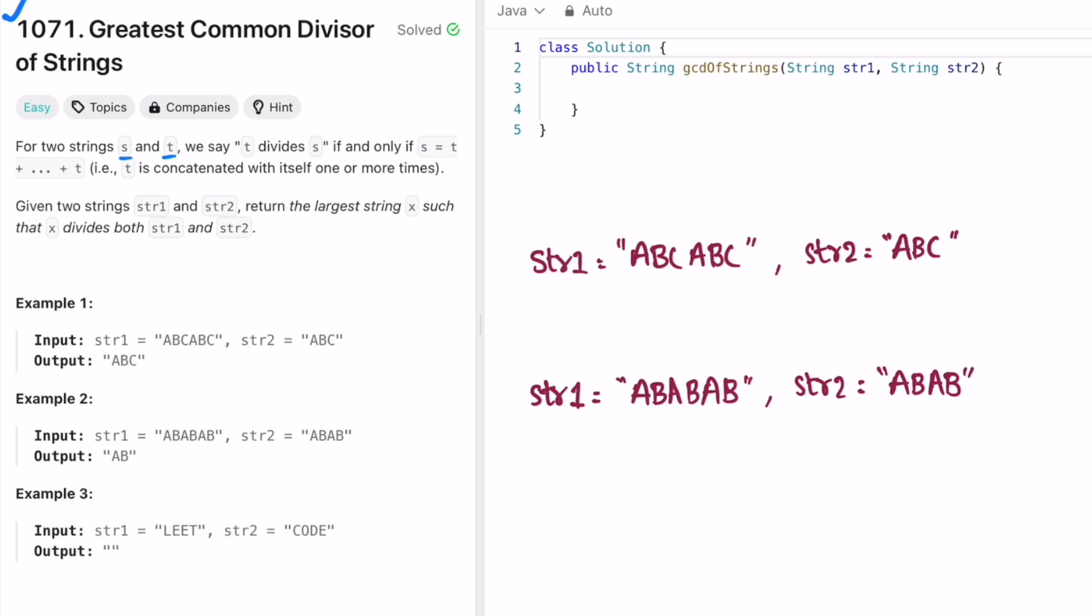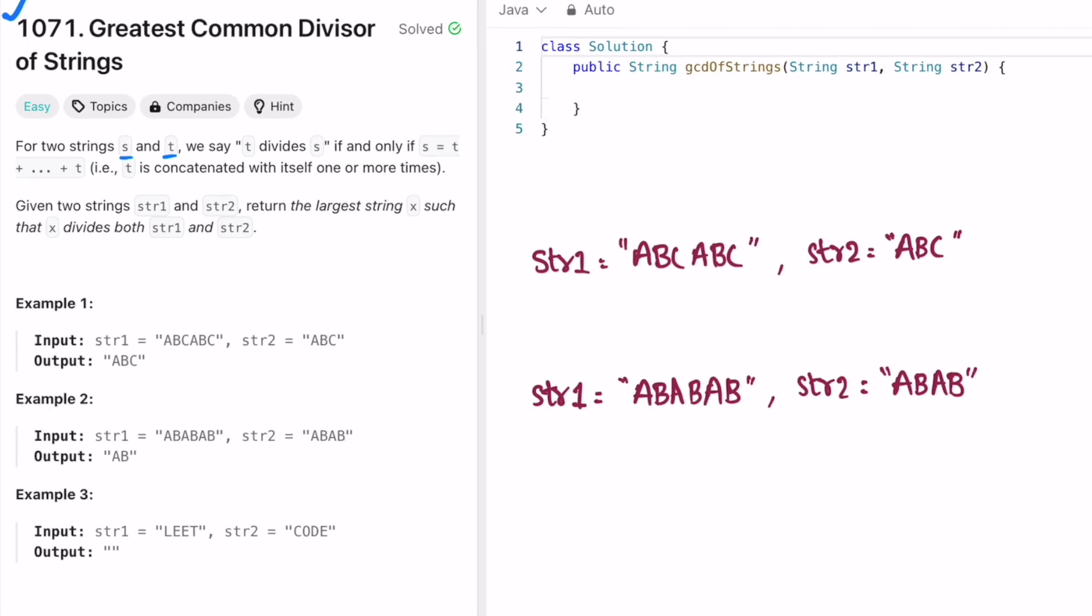In this question we are given two strings S and T, and we can say that T divides S if and only if S is made up of multiple concatenations of T. According to the question we're given two strings str1 and str2, and we have to return the larger string X such that X divides both str1 and str2.